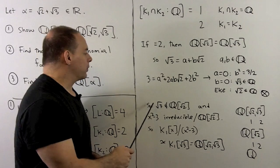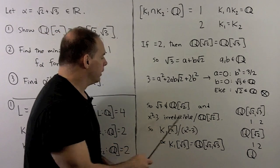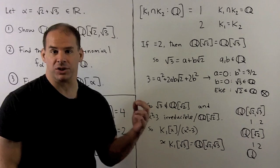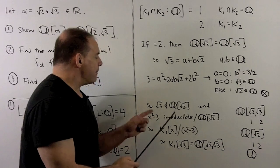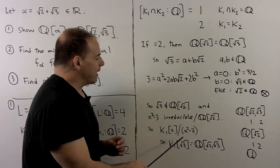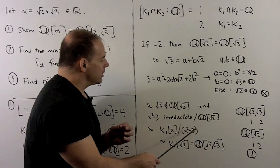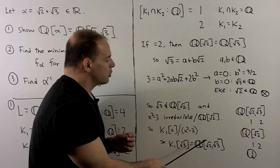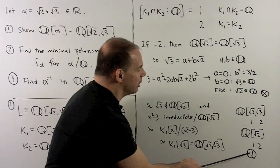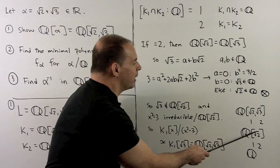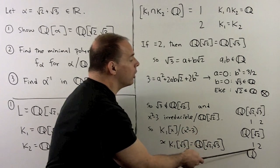That means square root of 3 is not in ℚ adjoined square root of 2. That means x² − 3 is irreducible over ℚ adjoined square root of 2. We know this factors in the reals as (x + √3)(x − √3), so it doesn't split over this field. That means if I take K1[x] mod the ideal generated by x² − 3, that gives a degree 2 extension of K1, isomorphic to K1 adjoined square root of 3, or ℚ adjoined square root of 2 adjoined square root of 3. So the field tower gives a degree 2 extension over ℚ(√2), and then another degree 2 by adjoining √3, giving degree 4 over the rationals.